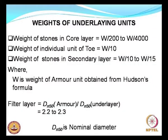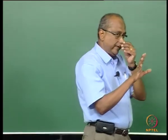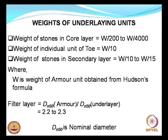Once you have decided the weight of the armour stone W, the weights of the underlying units can be calculated. The weight of the core can vary between W/200 to W/4000, the weight of the individual unit for the toe can be around W/10, and the weight of the secondary layer is W/10 to W/15. W is the weight of the armour unit obtained from Hudson's formula. The filter layer ratio D_N50 for the armour layer divided by the under-layer should be between 2.2 to 2.3.